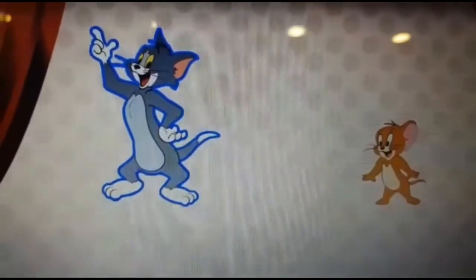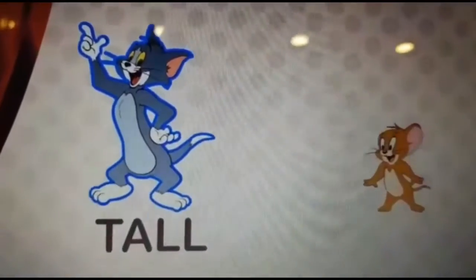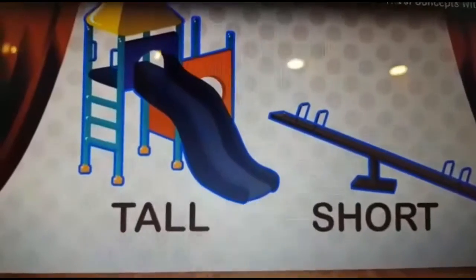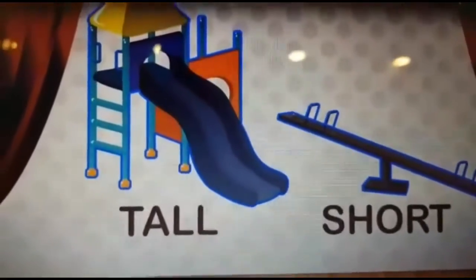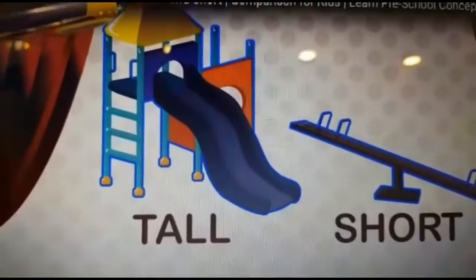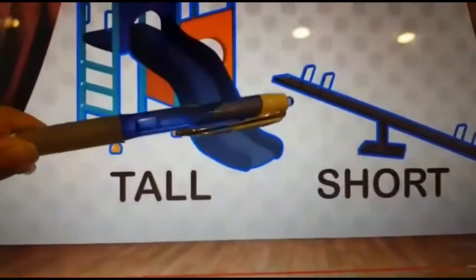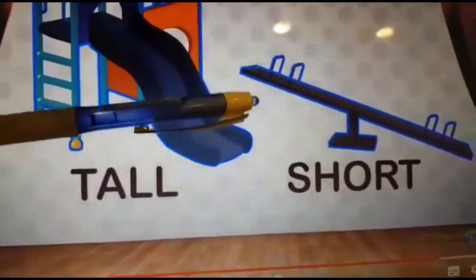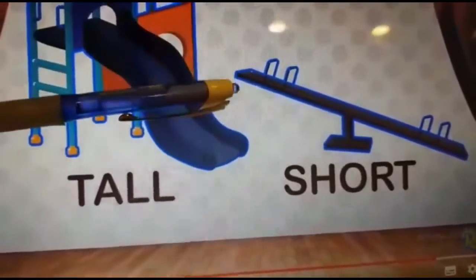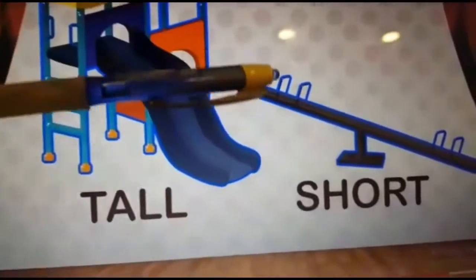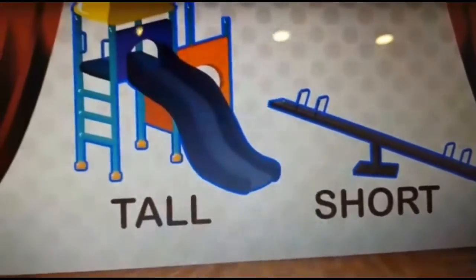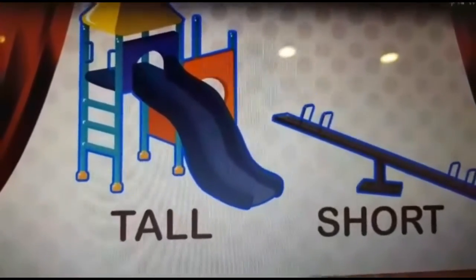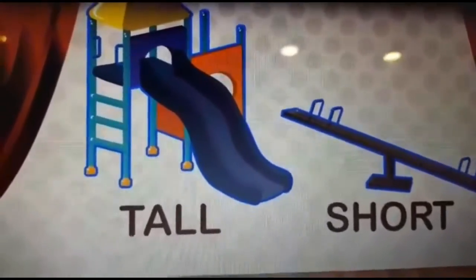Whereas we got one short Jerry. If you notice, we got here a tall slide because the height of the slide is more than the seesaw — that's why the slide is tall. But over here the seesaw's height is less than the slide, so the seesaw is short. That's how you check out tall and short based on the height of the objects.